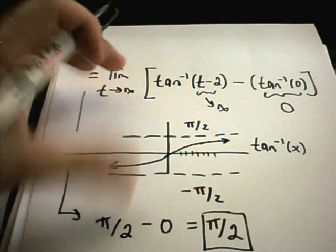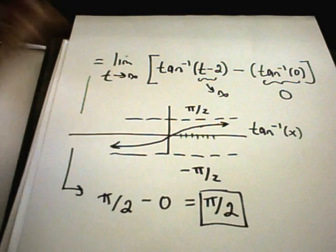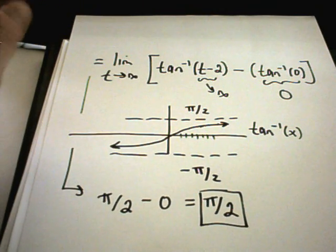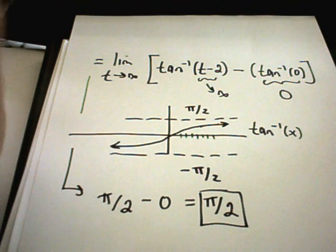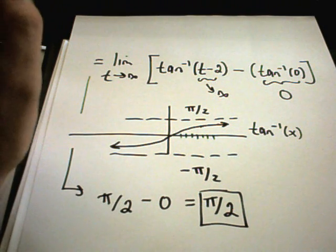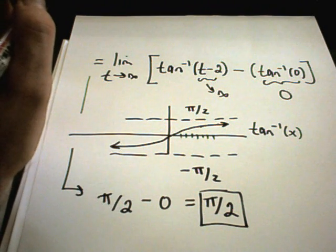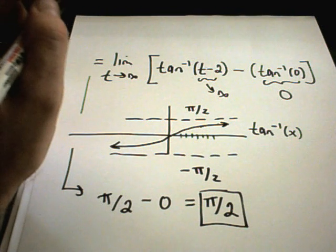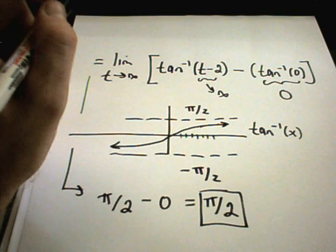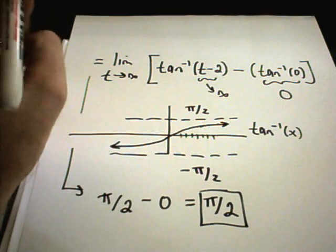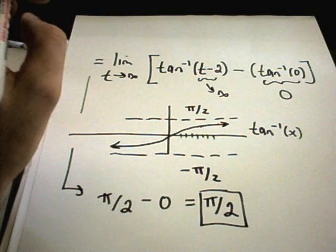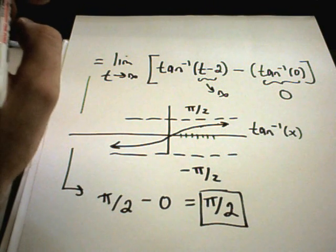So, I hope these examples make a little bit of sense. Like I said, the tricky part is really going to be the integration. Sometimes showing that things are increasing or decreasing can also be tedious. But, again, the basic idea, show it's a continuous positive and decreasing function. If it converges, so does the series. If the integral diverges, so does the series.